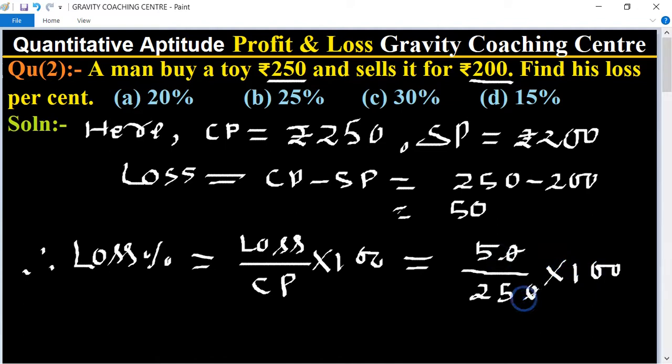Zero zero cancel, and table of 5: 5 into 5 is 25, and 5 into 20 is 100. So 20 percent is the loss percent.